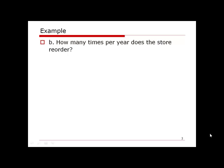Next, how many times per year does the store reorder — that is, how many orders does the distributor need to place every year? The number of orders is the total demand divided by the order quantity per order. For example, if we need 100 units and order 10 at a time, we place 10 orders per year. Similarly here, 9,600 divided by 300 gives 32 orders per year.